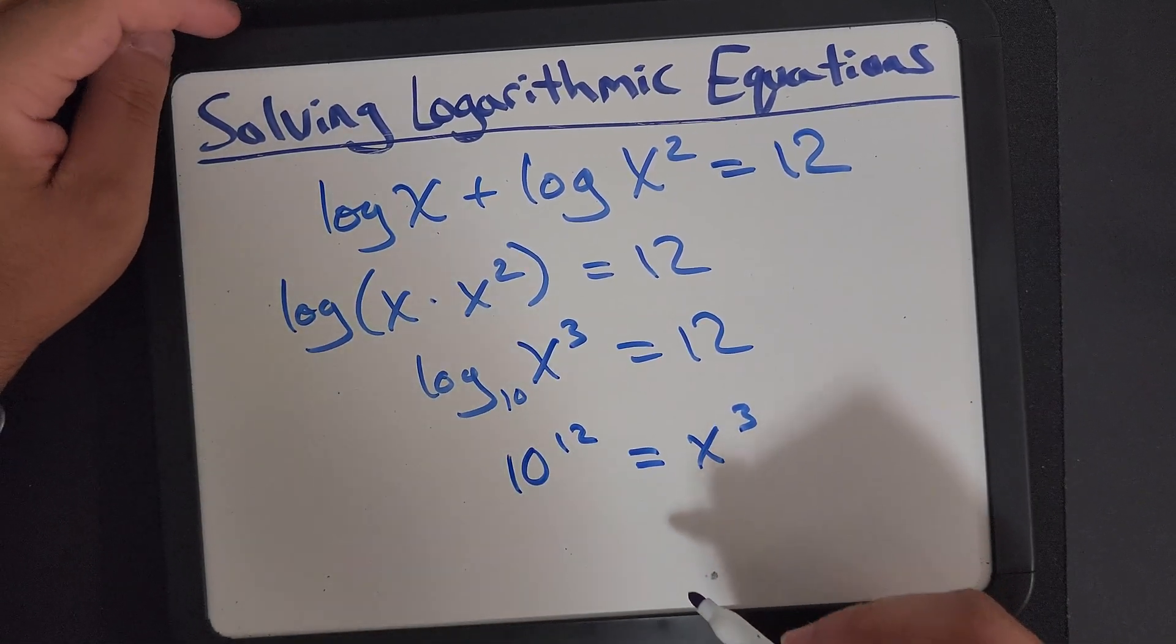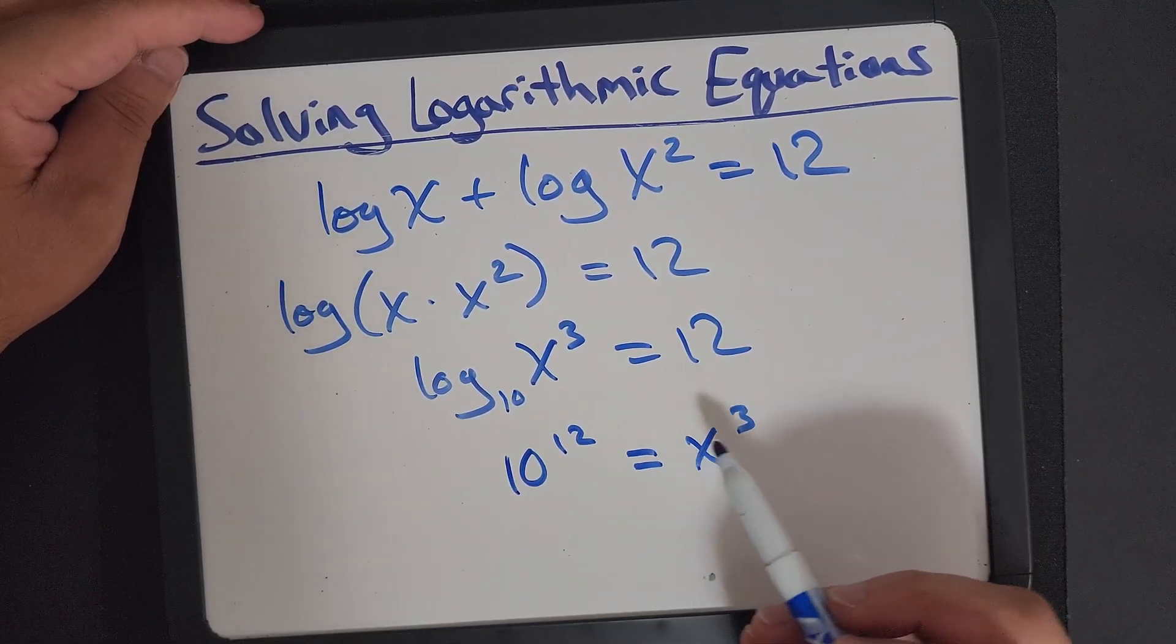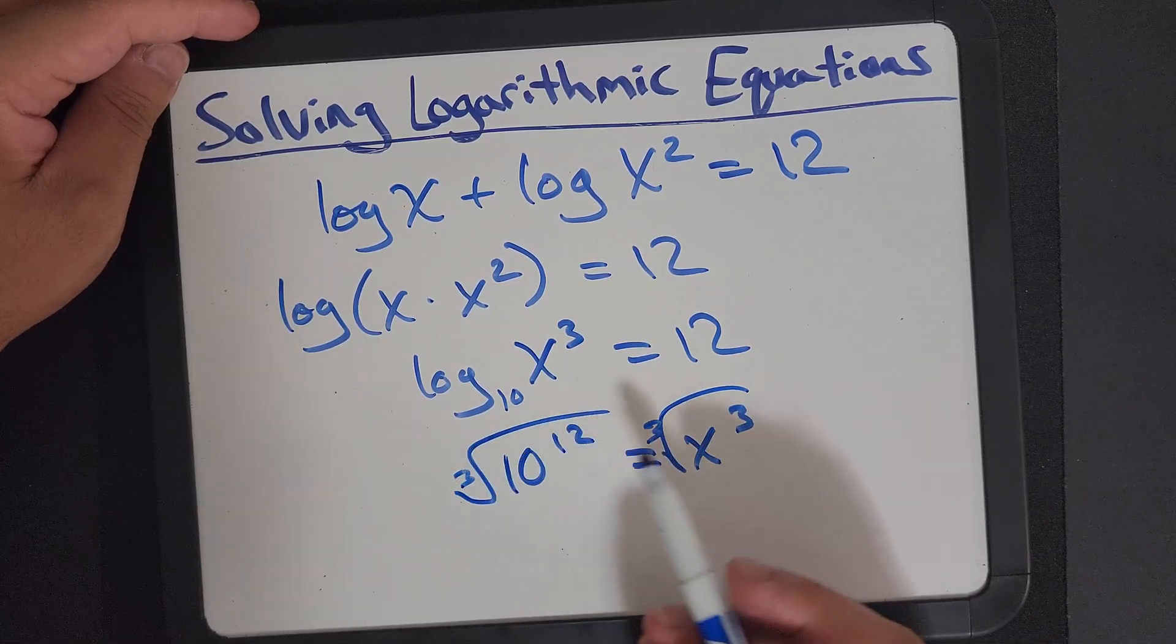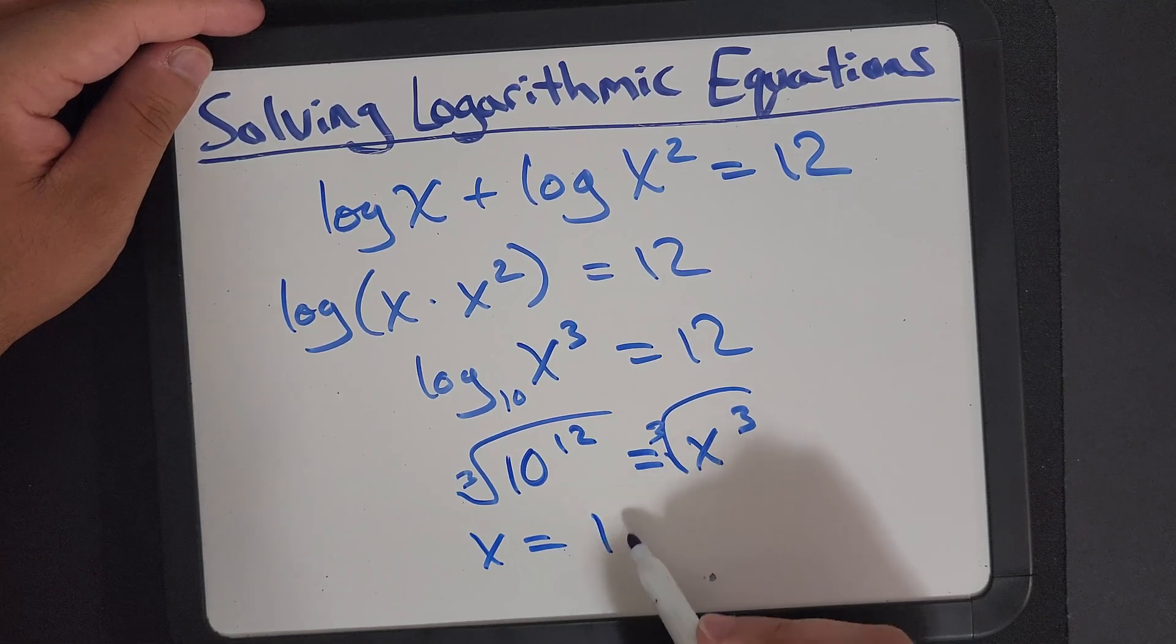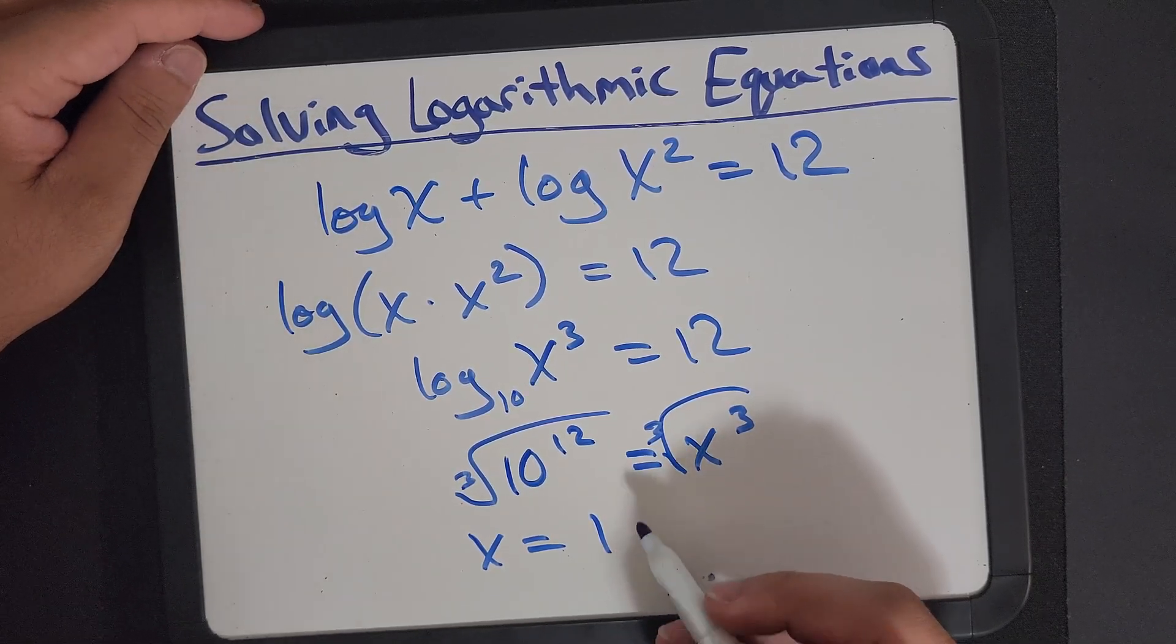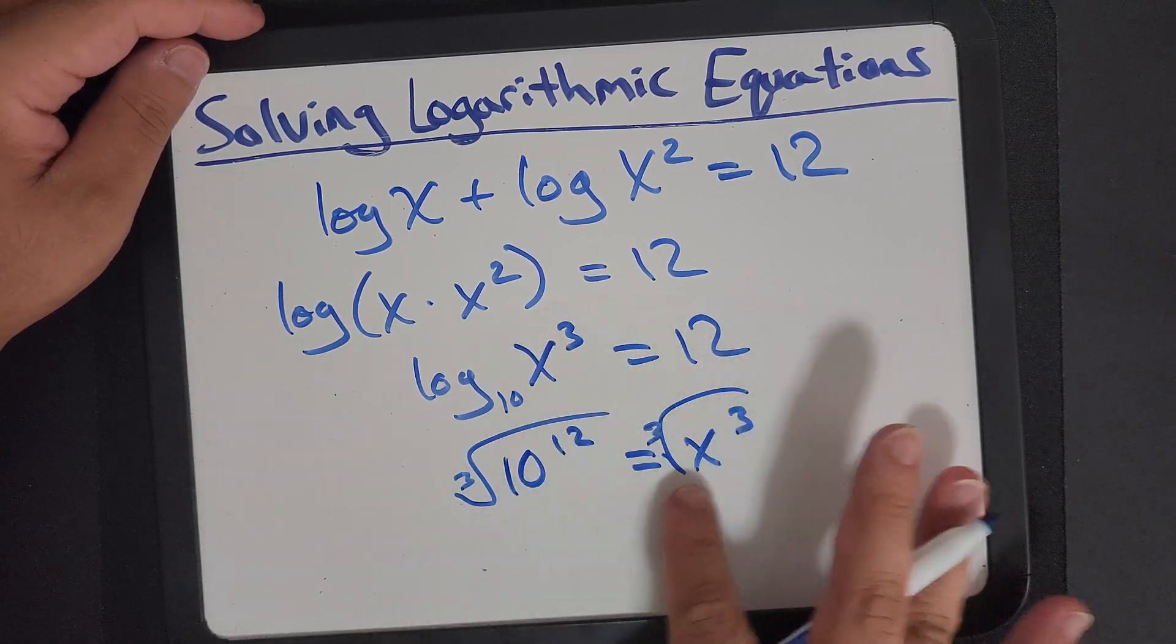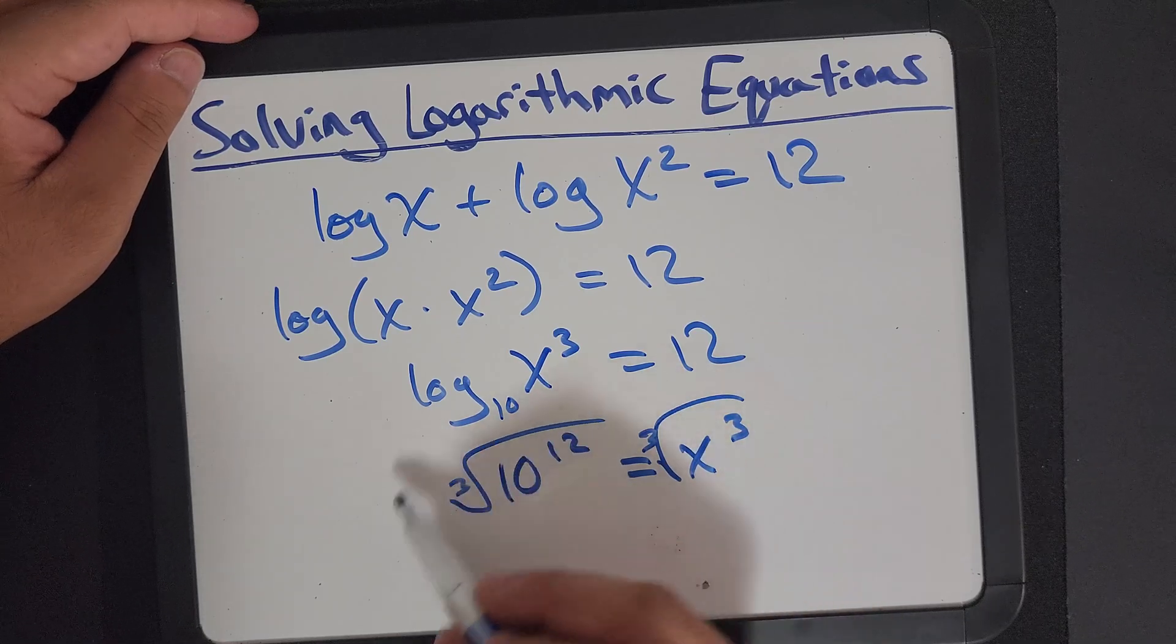So how are we gonna solve this? I mean, we could punch it into a calculator, just cube root both sides. That should give us x is equal to, well, we don't exactly need to, because this value here, 10 to the 12.